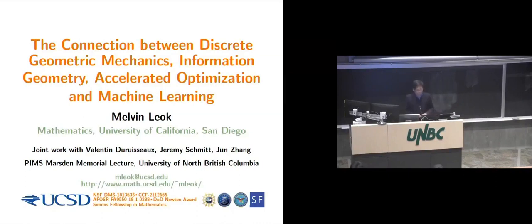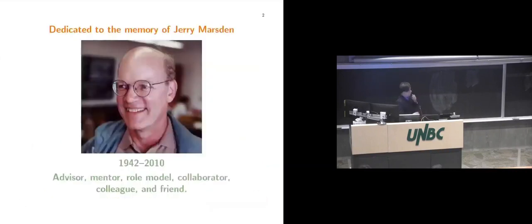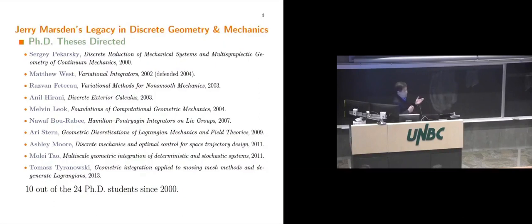This is joint work with current graduate student Valentin Driesu, former student Jeremy Schmidt, and collaborator Jin Zhang, who is a professor of mathematical psychology at the University of Michigan. It's been generously funded over many years by the National Science Foundation, DOD, the Air Force Office of Scientific Research, and more recently by the Simons Foundation. Jerry has been very influential in my life — I started working with him as an undergraduate at Caltech and stayed on to do a PhD. He's been a great advisor, mentor, role model, collaborator, colleague, and friend. While at Caltech since 2000, he advised 24 PhD students, of whom 10 were in the broad area of discrete geometry and mechanics.